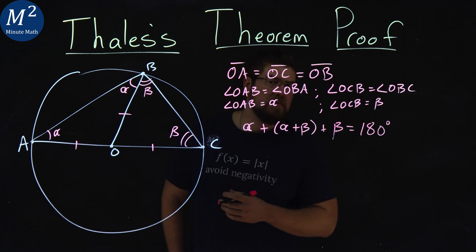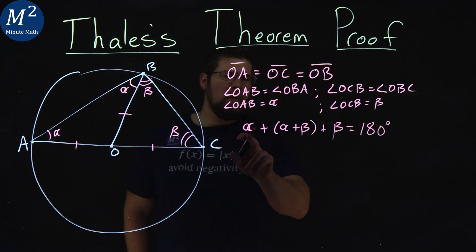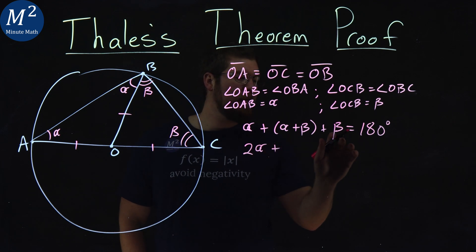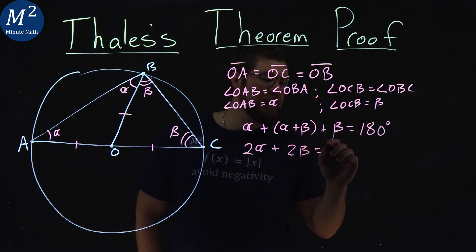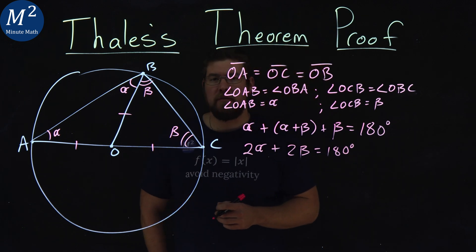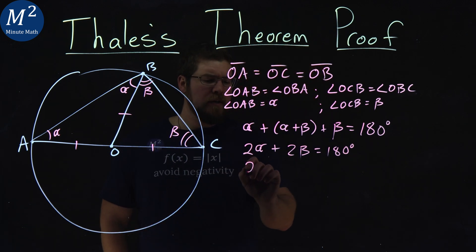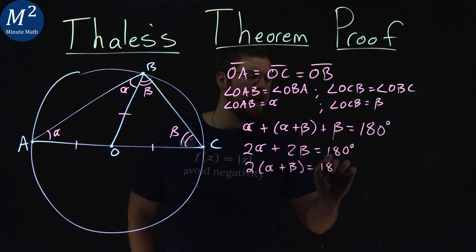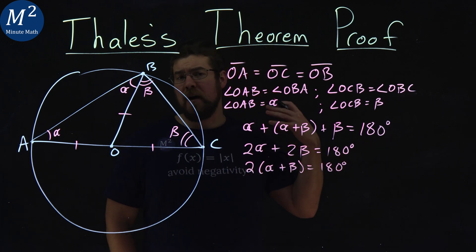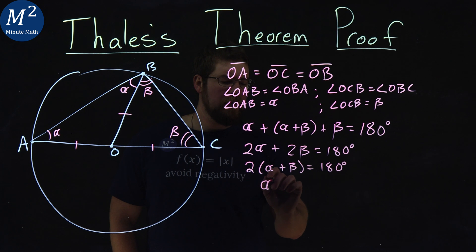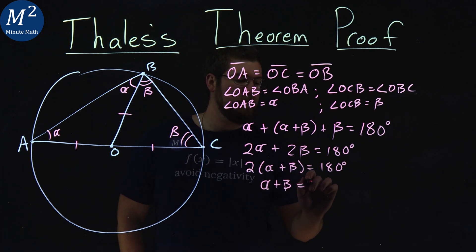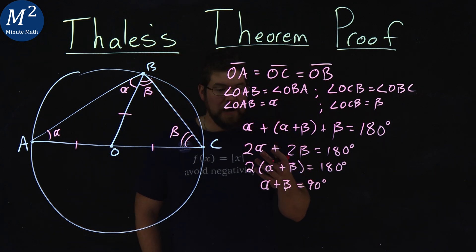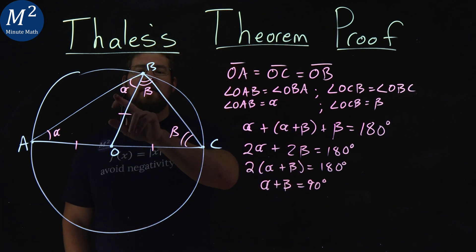Well, from there, let's just do some algebra here. Alpha plus alpha is 2 alpha plus beta plus beta is 2 beta. That's 180 degrees again. Hopefully you've seen where this is going. I pull out a 2 here, and 2 times alpha plus beta is what it's equal to. We have 180 degrees. Divide both sides by 2, and alpha plus beta is equal to 90 degrees, right? 180 divided by 2 is 90 degrees.